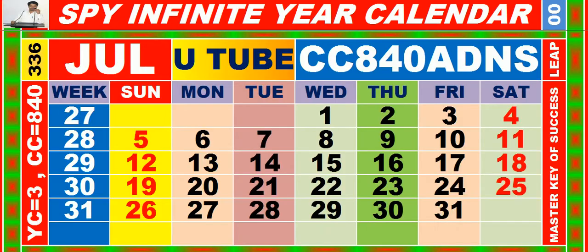Calendar for the month of July, having calendar code equal to 840.